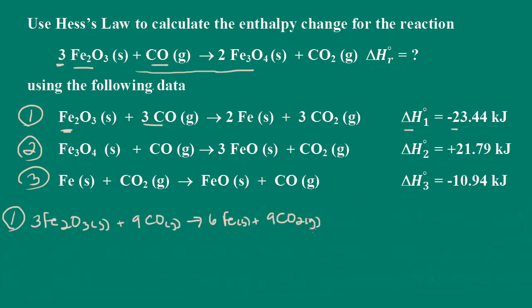Now, because I multiplied these coefficients by 3, I also have to multiply this delta H by 3. So 3 times negative 23.44 kilojoules. What we're going to do is add these equations and then add the delta H values to come up with the delta H for this overall reaction.